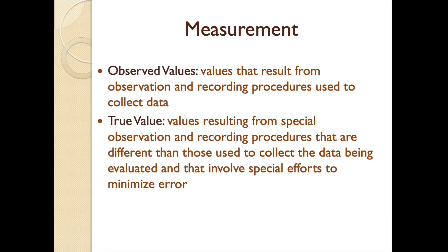The textbook makes a distinction between some types of measurement — that is, the observed values and the true value. Observed values are going to be values that result from observation and recording procedures used to collect data. For us in behavior analysis, this means the values the data collector observed — what the data collectors see and record, whether on pen and paper or a computer.